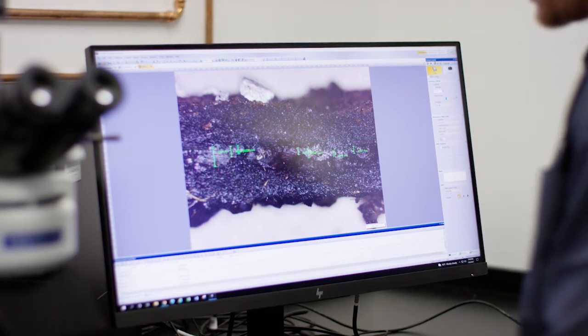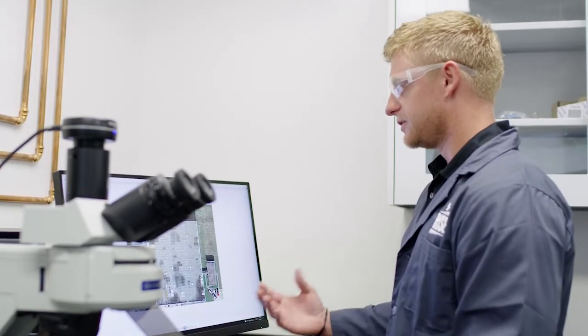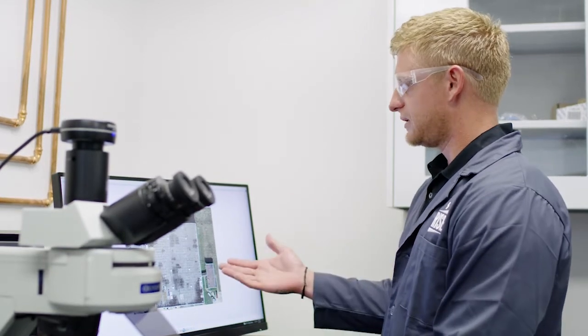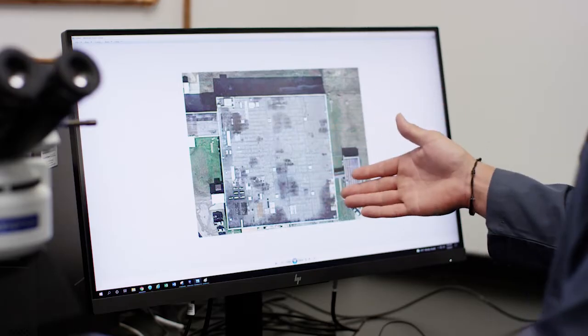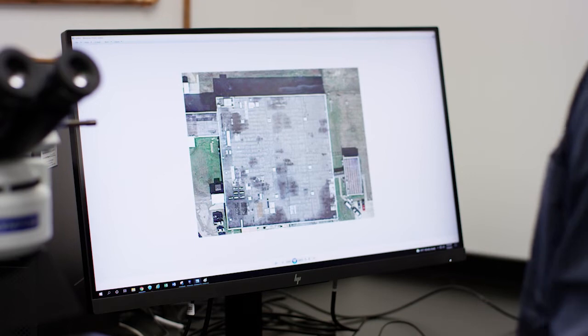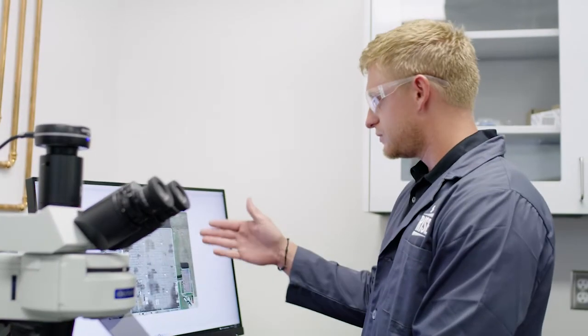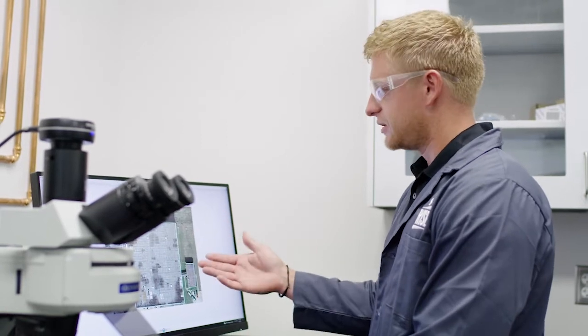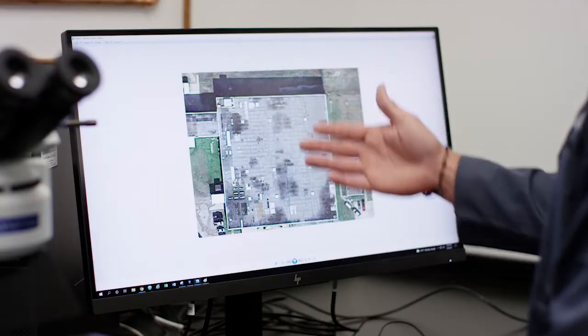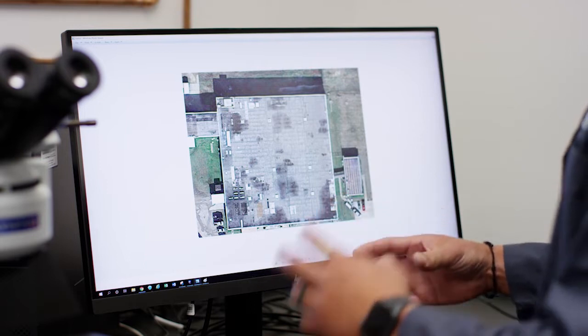So once all that is done, all of the cross-section cuts and measurements are done, I typically have someone in the field get me a Google Earth image of the building that the roof cuts came from. And then they'll go on there and they will mark and number where each cut was taken as for numbering the samples as well. That way we know exactly where those samples came from.